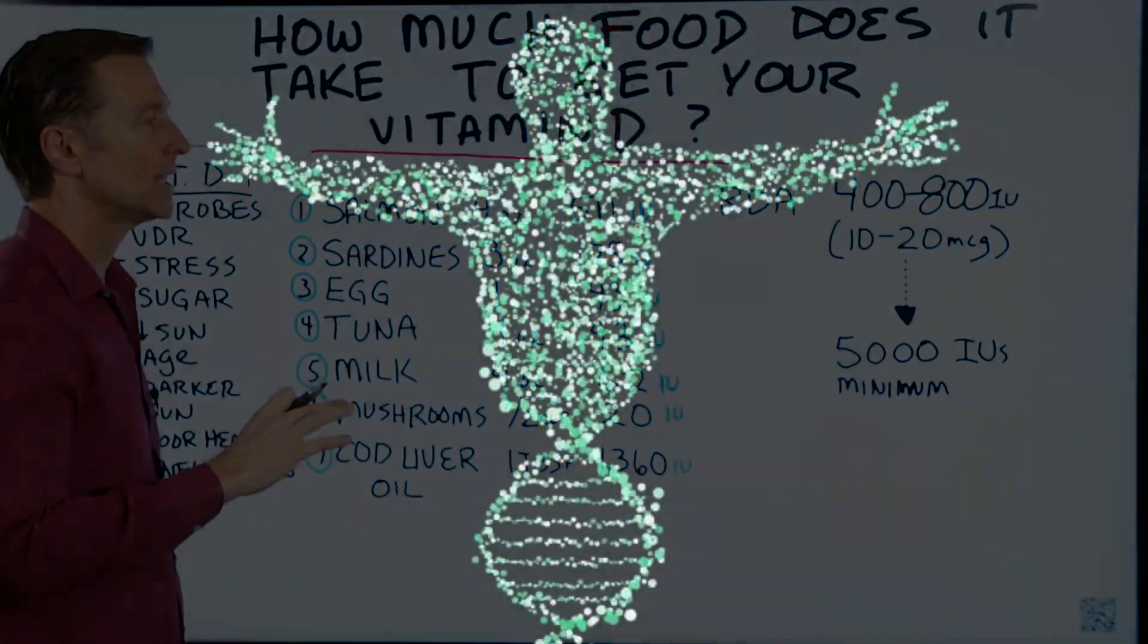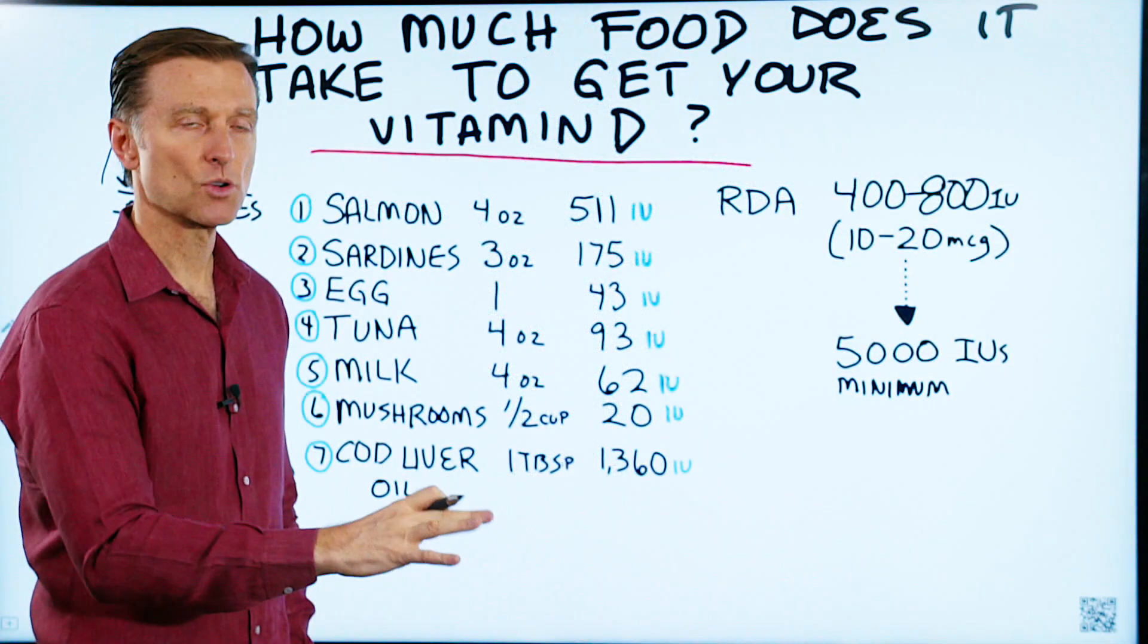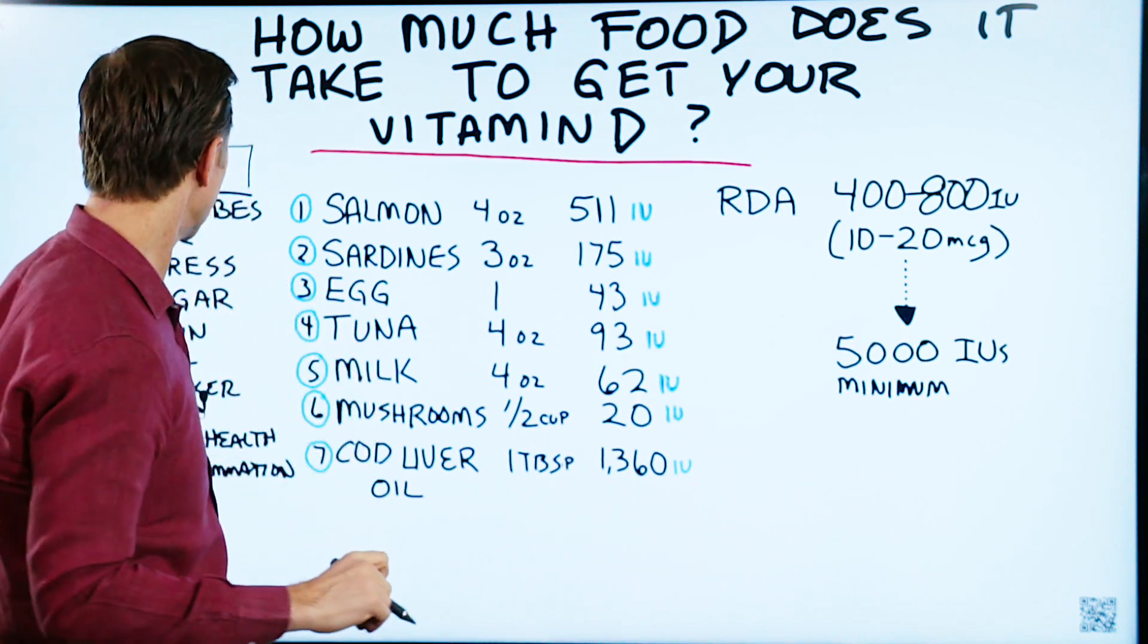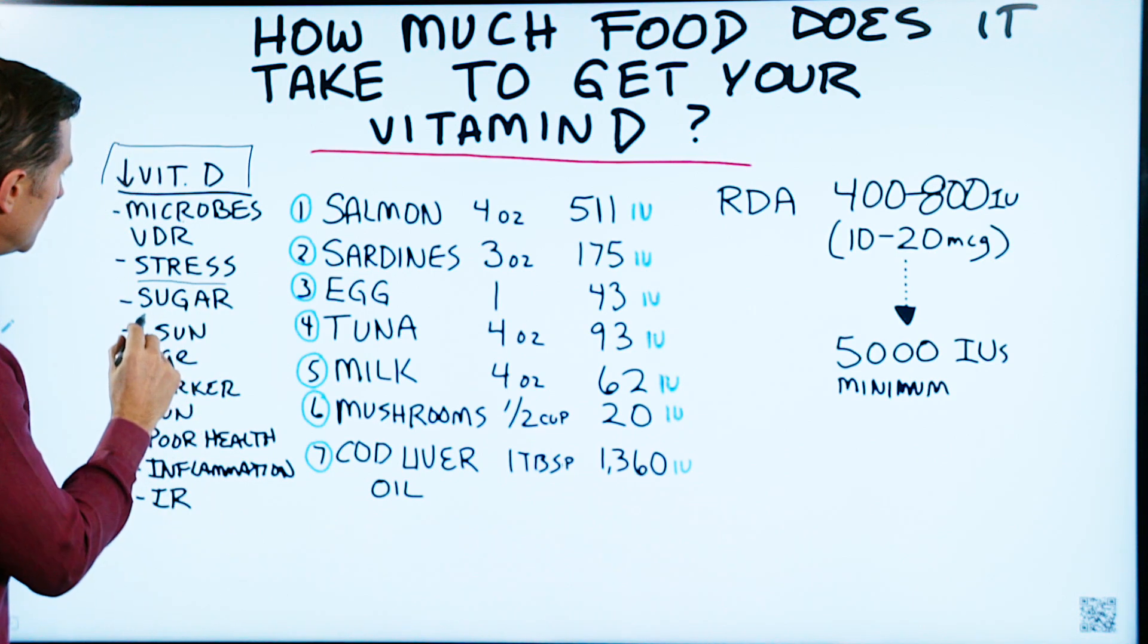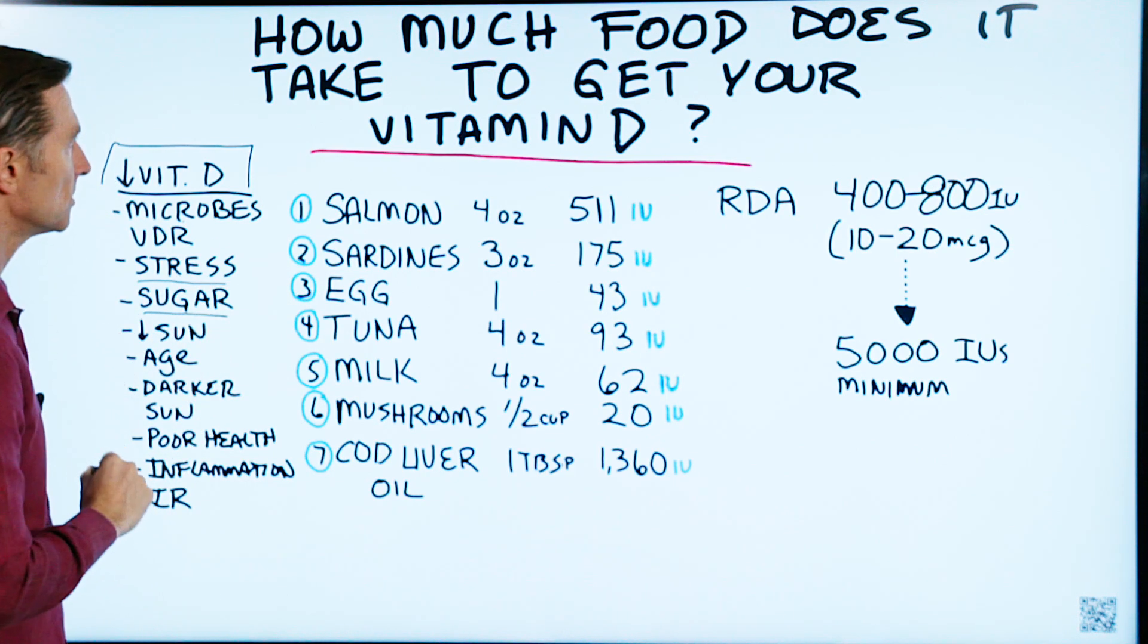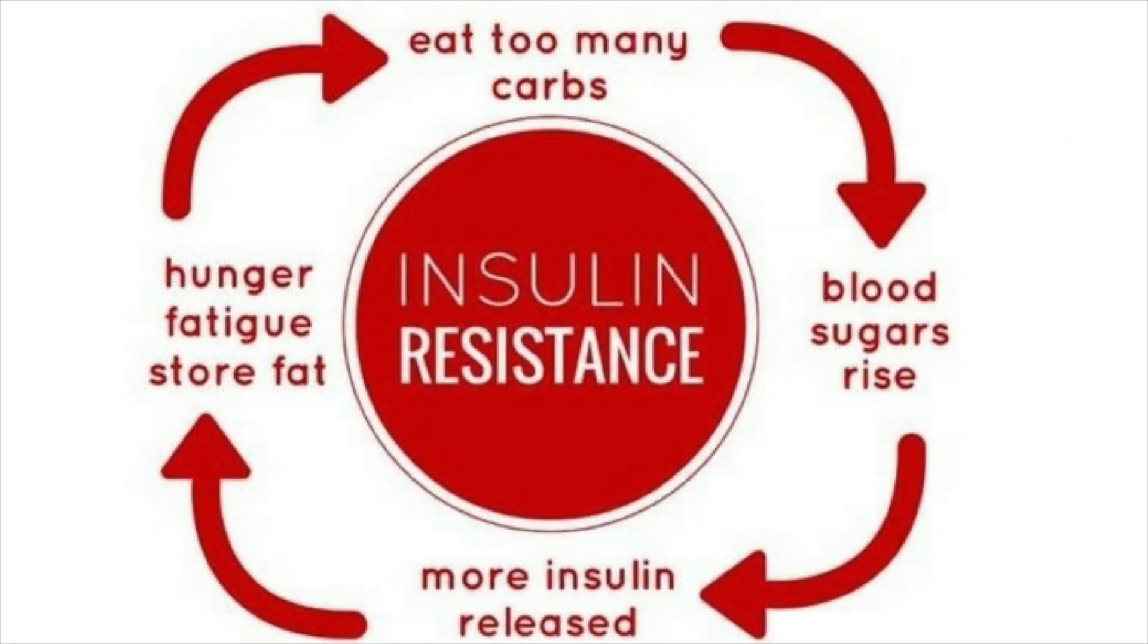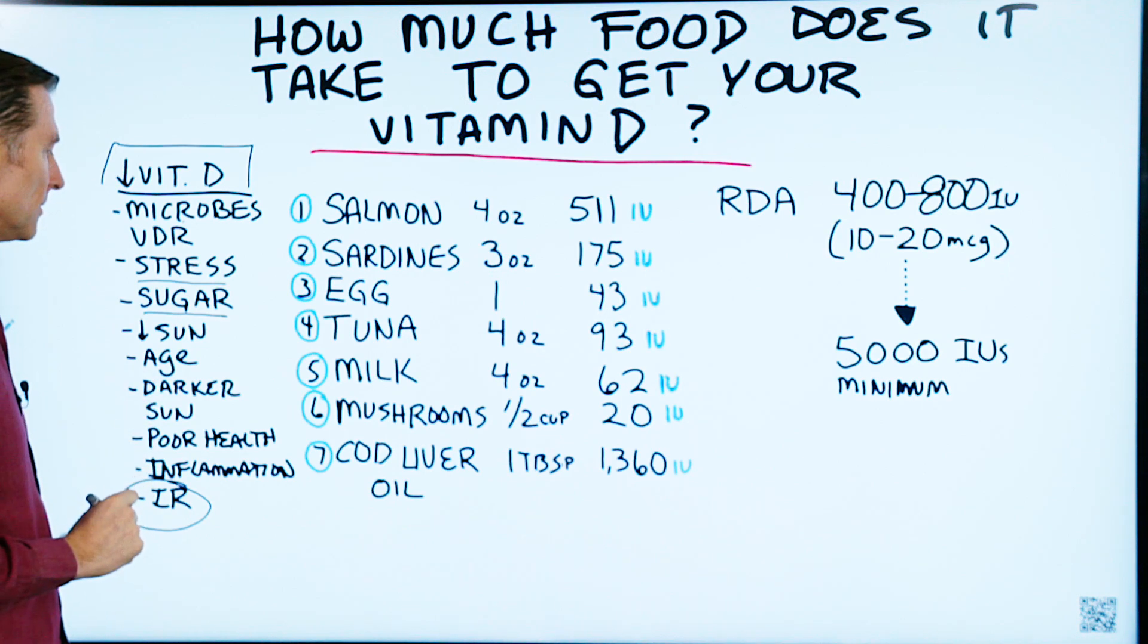Also, there's certain genetic defects that a lot of people have in just simply the absorption of vitamin D. I've done some videos on that. I'll put those links down below. Stress will deplete your vitamin D. Consuming too many refined carbs and sugar will deplete your vitamin D, not to mention having insulin resistance, which most of the population has, will decrease your ability to absorb vitamin D.